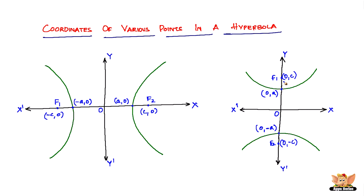Focus F1 lies on the y-axis in the positive direction and is given by (0, c). The vertices also lie on the y-axis, so the upper vertex is given by (0, a), since it lies in the positive direction of the y-axis.